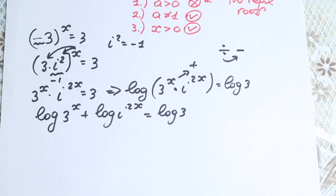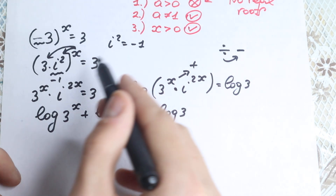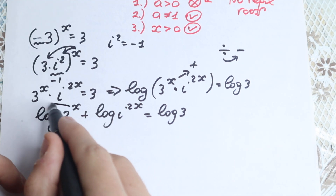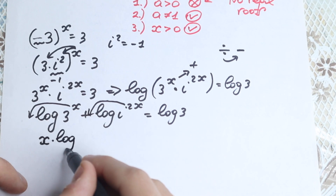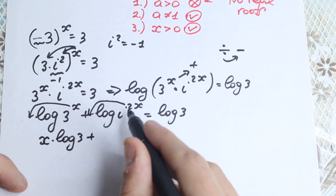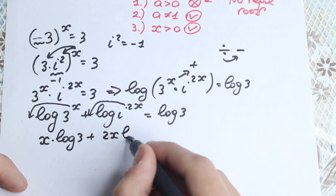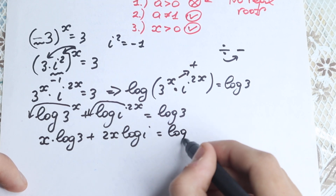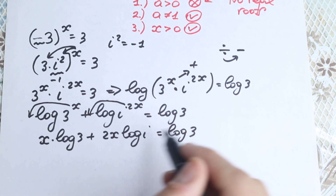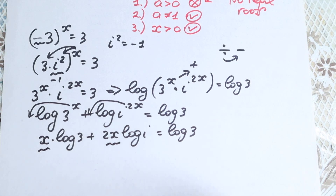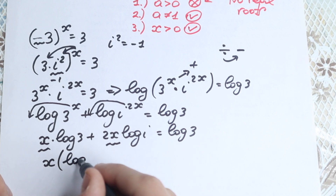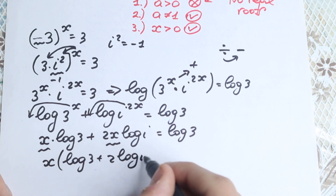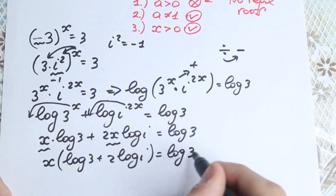Using the power rule for logarithms, the exponents come to the front: x·log(3) plus 2x·log(i) equals log(3). We can see that x is a common factor on the left side. Factoring x out, we get x times (log 3 + 2·log(i)) equals log 3.